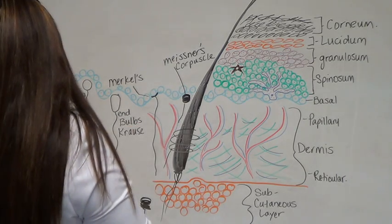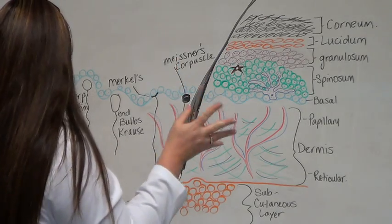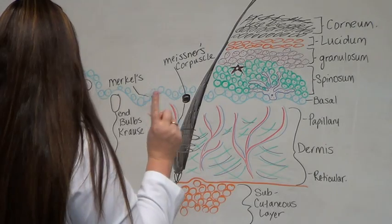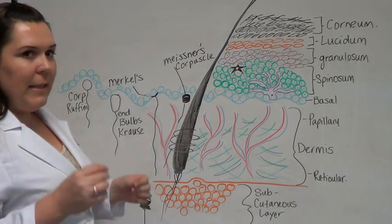Another one we have is the Meissner's corpuscle. These are found in the skin, hands, feet. They're responsible for touch, pressure, and cold. They're grouped in the fingertips, lips, orifices of the body, and the nipples.